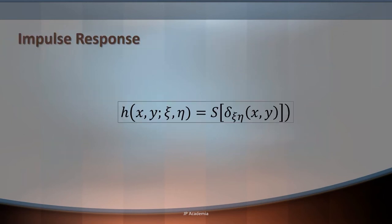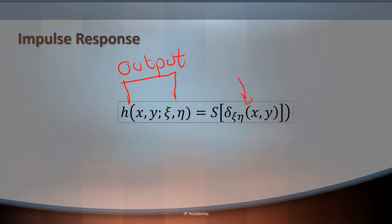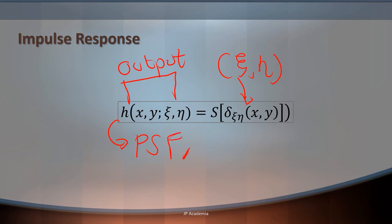Let us now consider the output of the system S to a point impulse. Let us denote H as the output of the system S to our input, which is a point impulse — a delta function located at psi, eta. This is a point impulse as our input. The response H is also known as your point spread function or PSF, which is equivalent to your impulse response function.